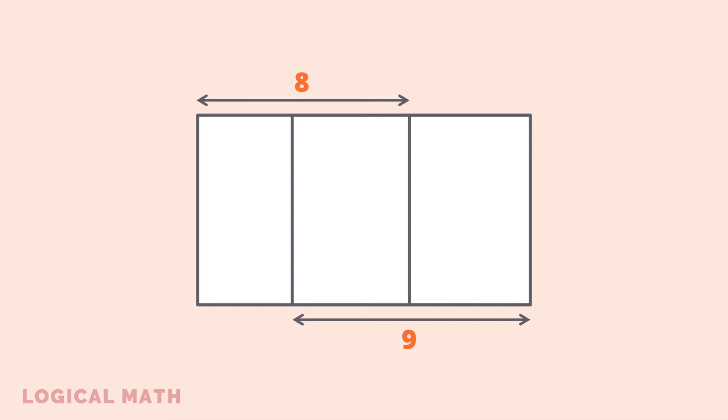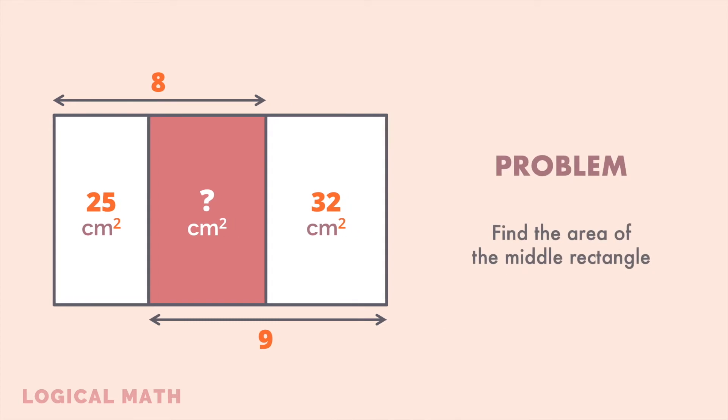It is also known that the area of the left rectangle is 25 square centimeters and the area of the right rectangle is 32 square centimeters. What is the area of the middle rectangle? Pause the video if you want to figure it out for yourself, and then keep on watching for a solution.